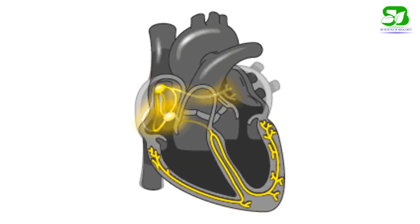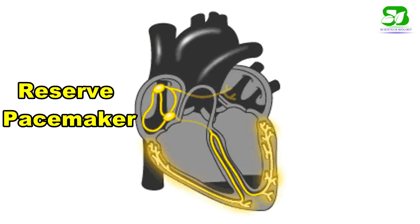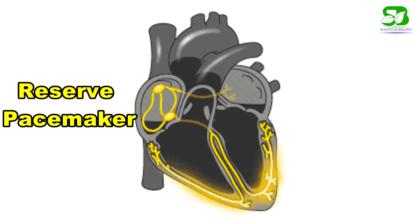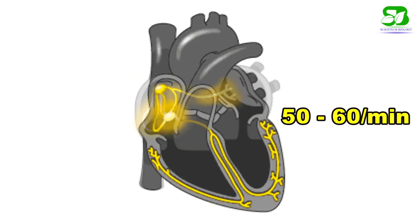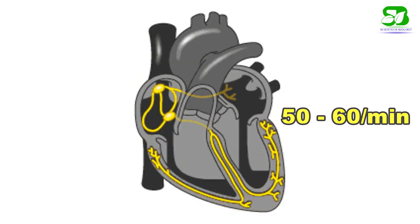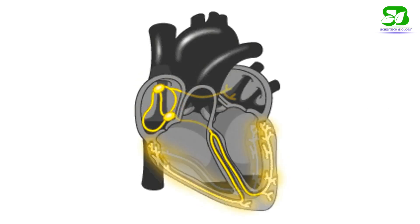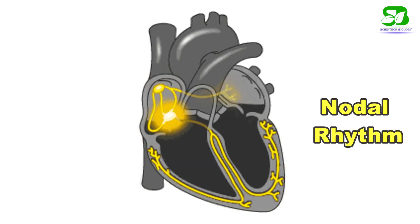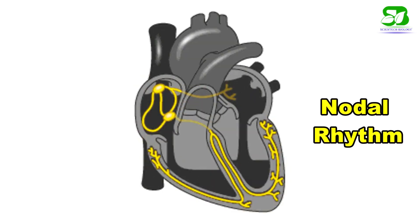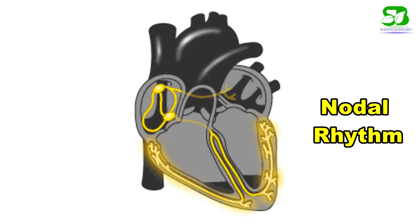The AV node acts as a reserve pacemaker, as it also initiates cardiac impulses at the rate of 50 to 60 per minute. The rhythm that originates in the AV node is known as nodal rhythm.